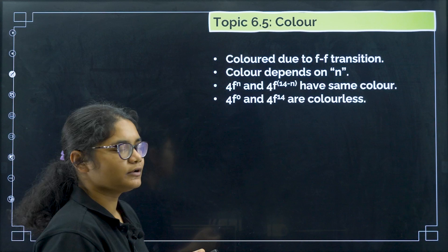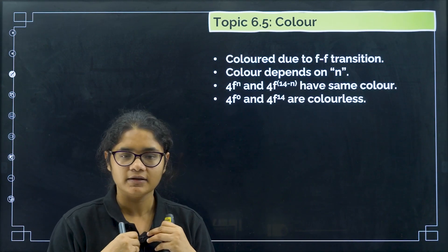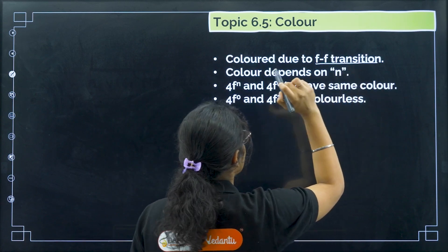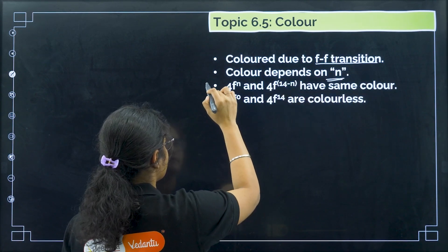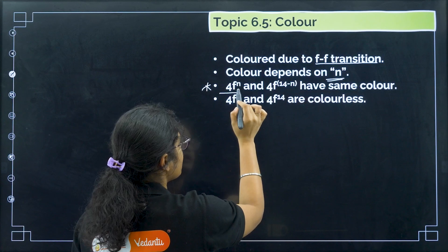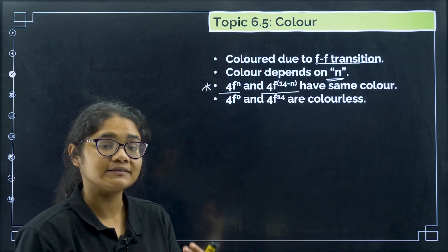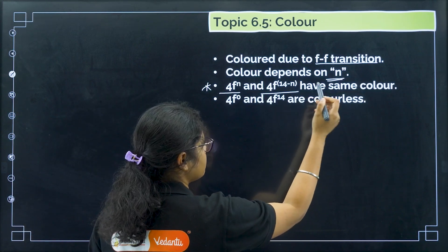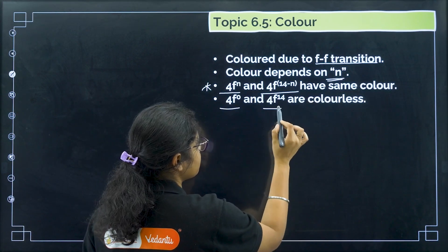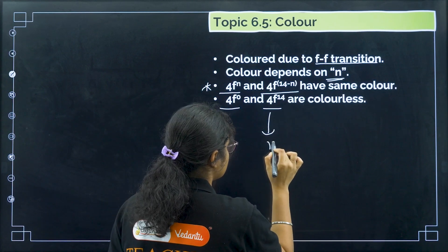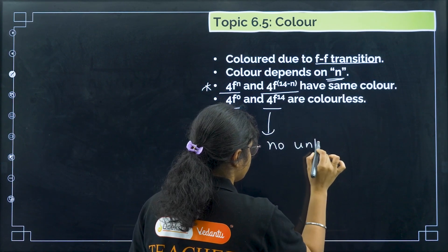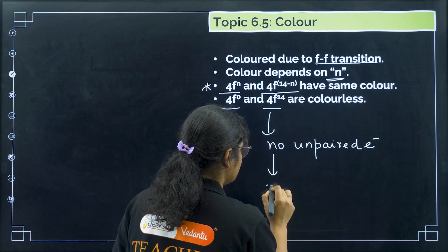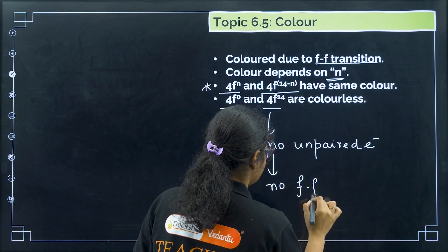Like in D block where color is due to d-d transitions, in lanthanides the color is due to f-f transitions. The color depends on the number of unpaired electrons. An important rule: 4fⁿ and 4f¹⁴⁻ⁿ configurations will have the same color. Also, 4f⁰ and 4f¹⁴ are colorless because there are no unpaired electrons, so no f-f transition occurs.